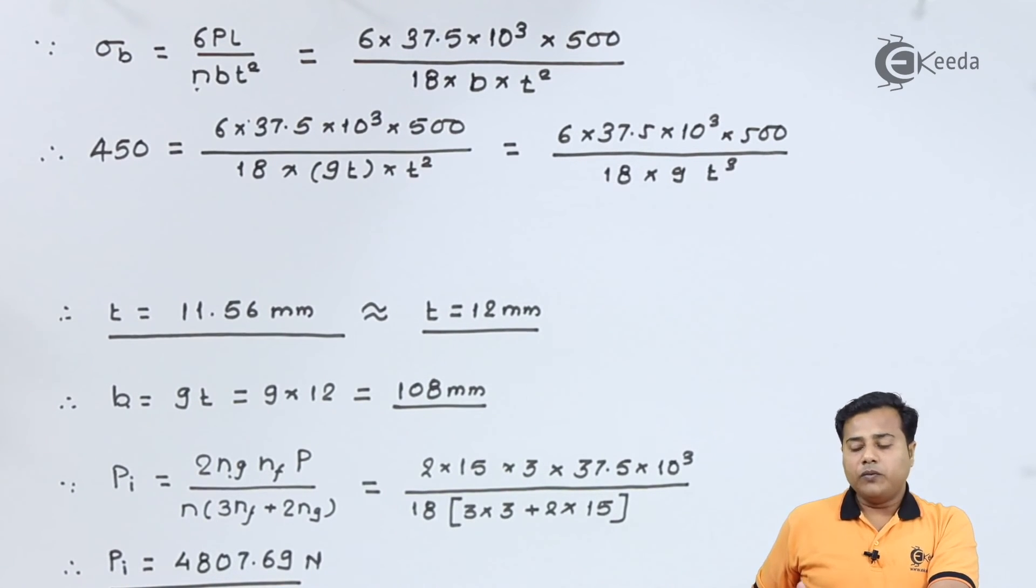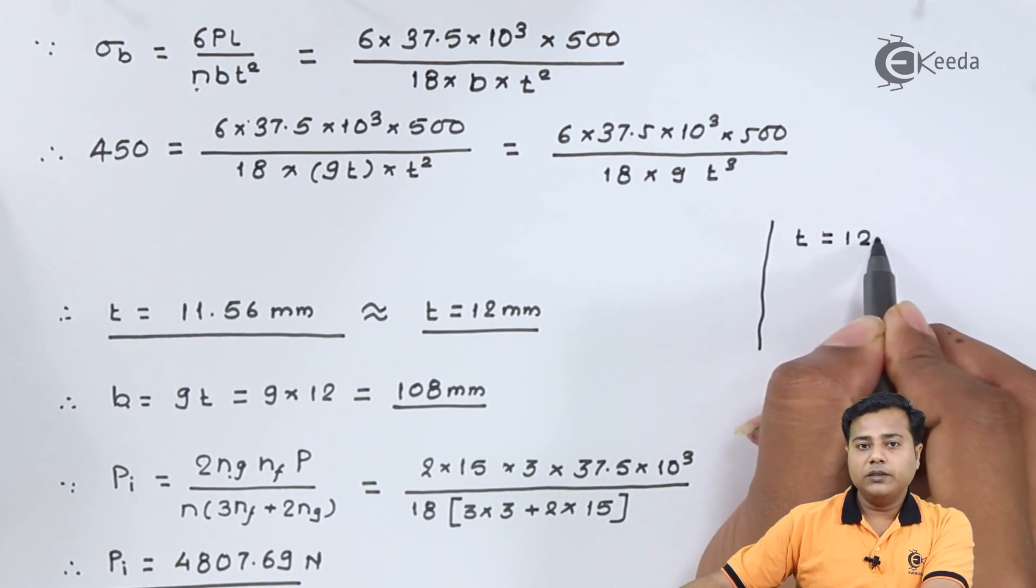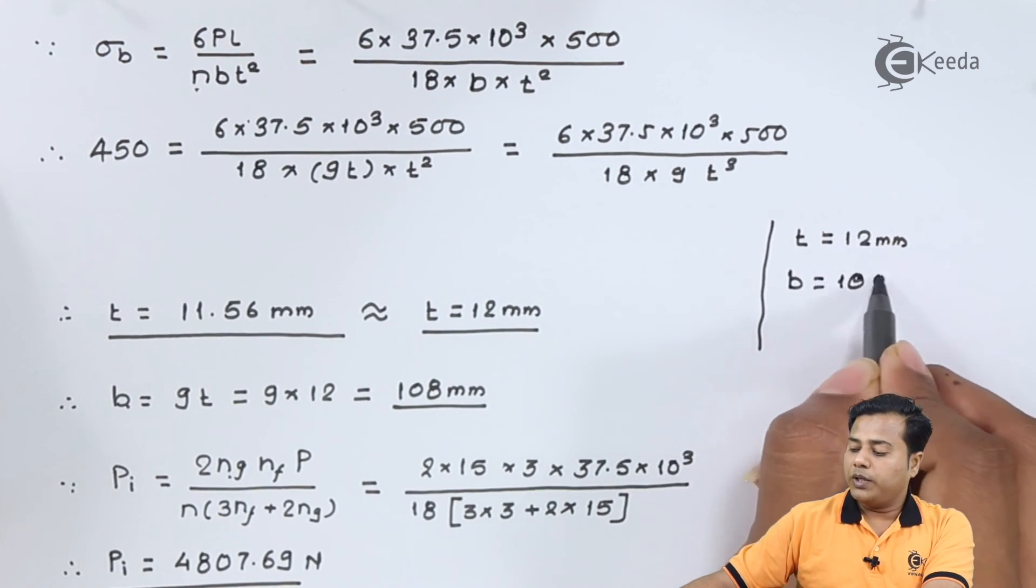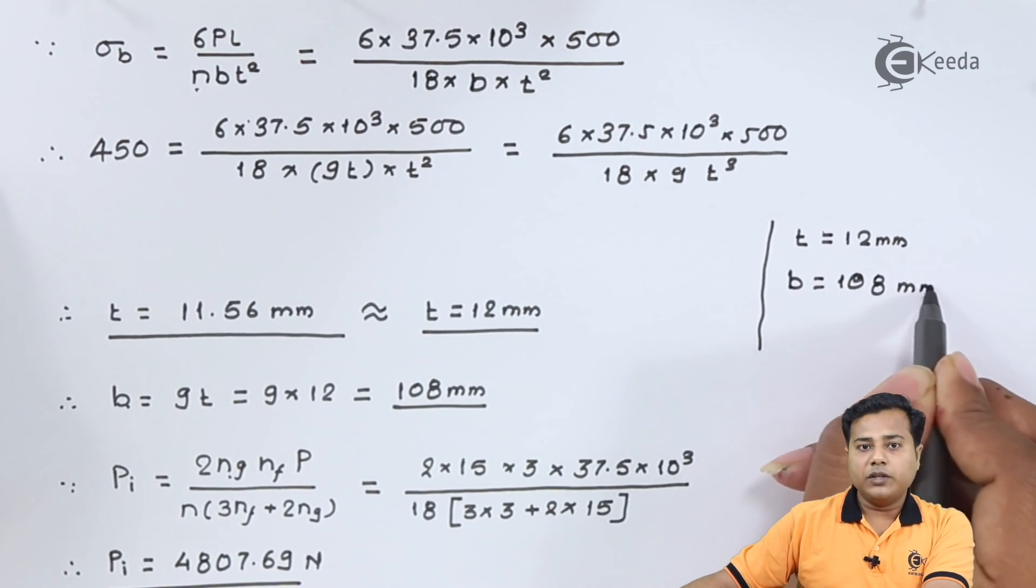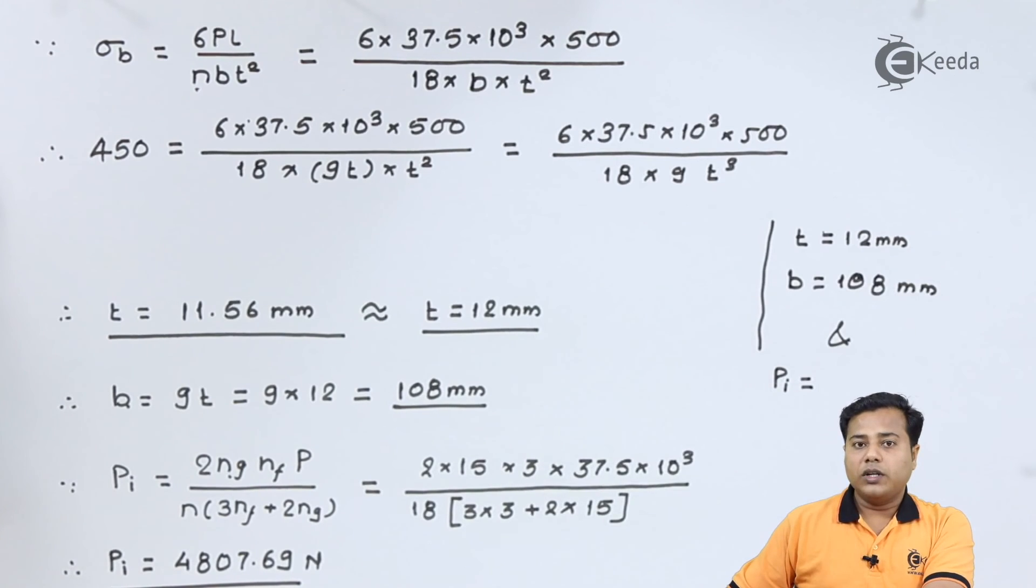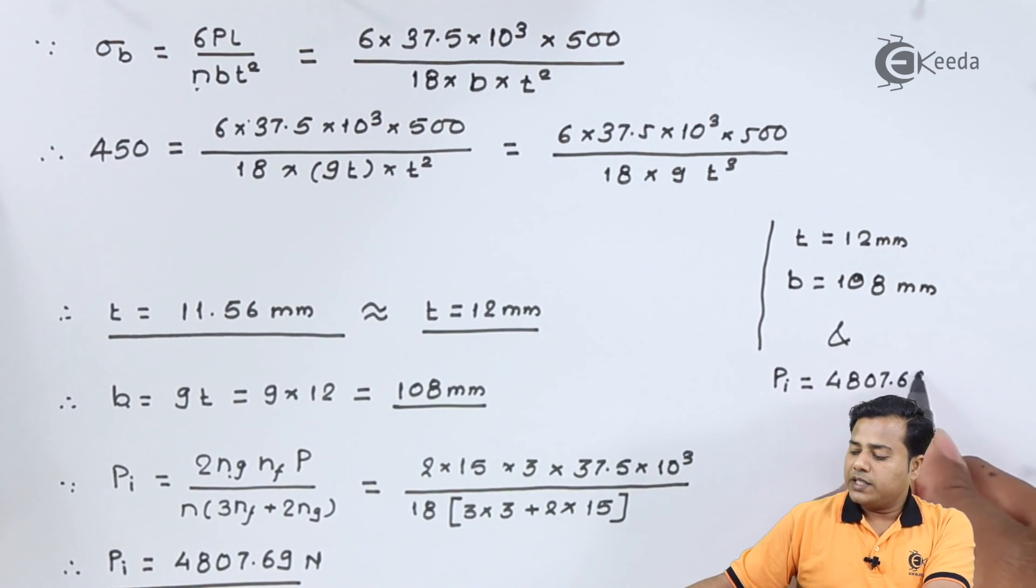Hence a minimum of 4807.69 Newton force should be applied so as to keep the given leaf spring in equilibrium, that is in pre-stress condition. So there we have concluded with different factors. The first factor being t equals 12 millimeter. The breadth or width came out to be 108 millimeter and the final thing is the initial force to remove the nipping is 4807.69 Newton.